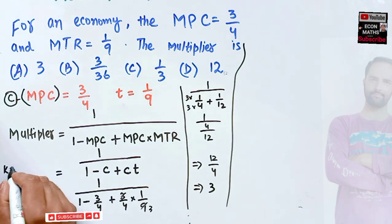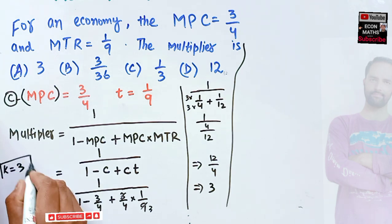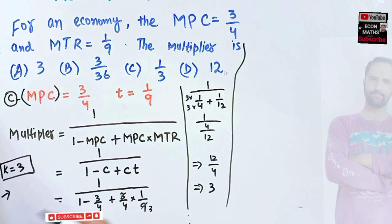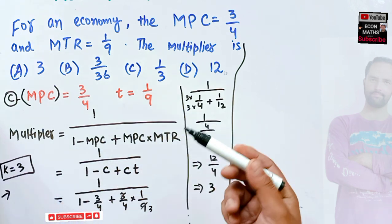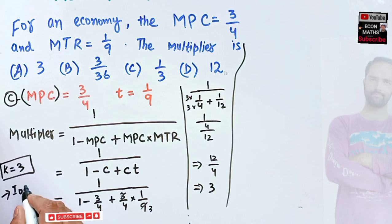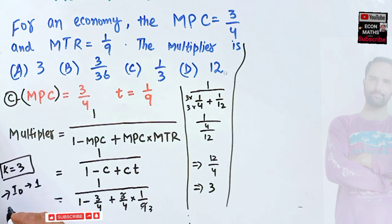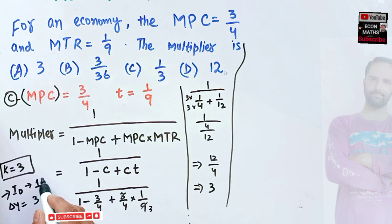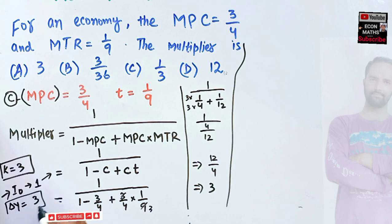When the multiplier comes out to be 3, it tells us what happens to income when there is any change in the variables. If autonomous investment increases by 1 unit, the multiplier says our income will increase by 3 units. This is the concept of the multiplier.